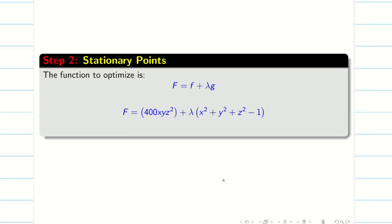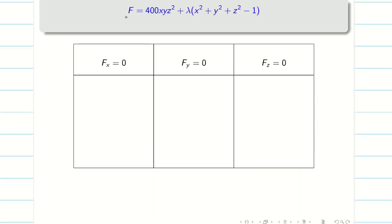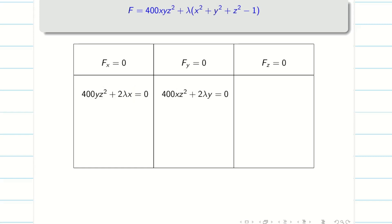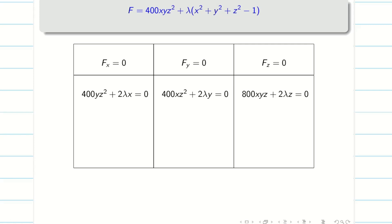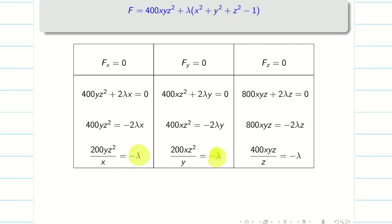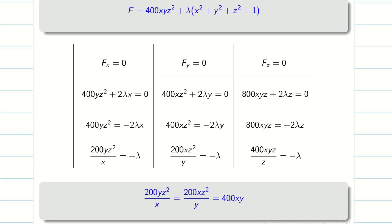Step 2: we find the stationary points by computing Fx = 0, Fy = 0, Fz = 0. Differentiating F partially with respect to x and equating to 0 gives: 400yz² + 2λx = 0. For Fy = 0, we get: 400xz² + 2λy = 0. For Fz = 0, since z appears as z², we get: 800xyz + 2λz = 0. Segregating λ to the other side in all three equations, since all right-hand sides equal −λ, we can equate the left-hand sides to get a new combined equation.